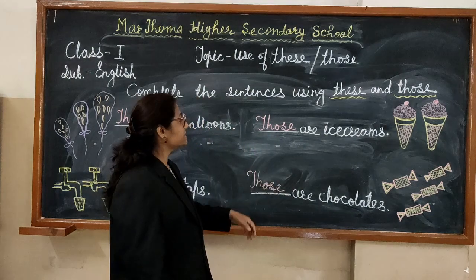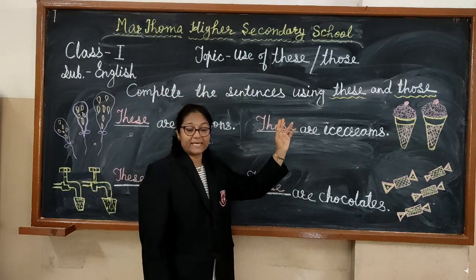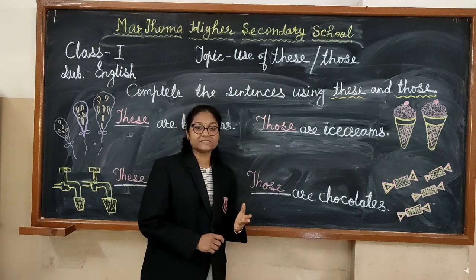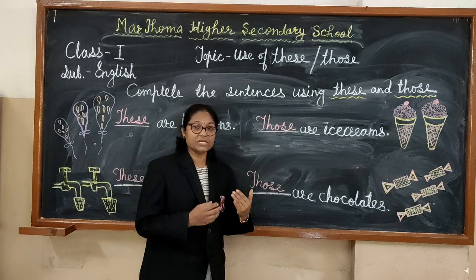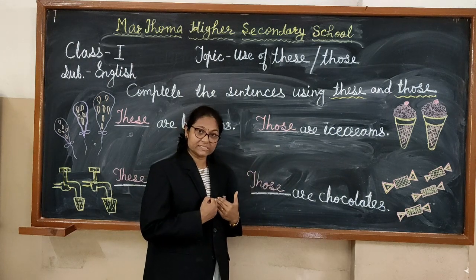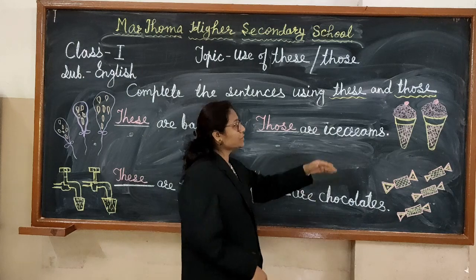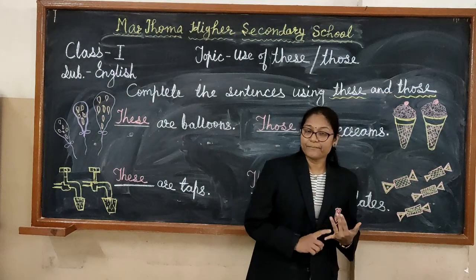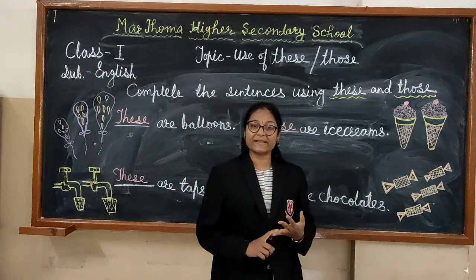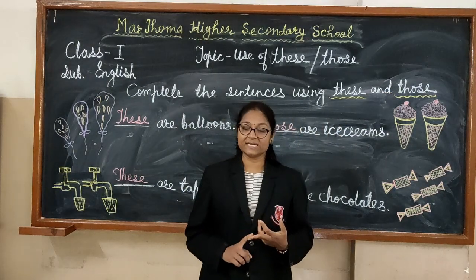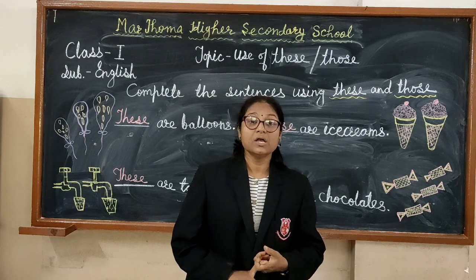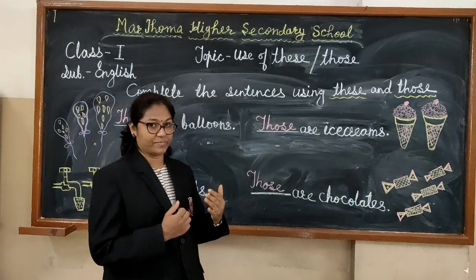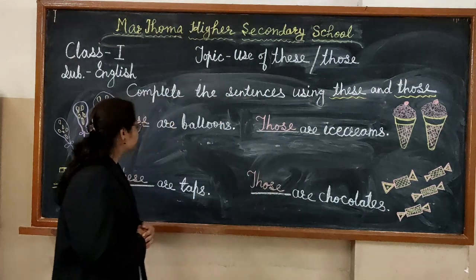We use 'these' to show many things, persons, and places which are near to us. And we use 'those' to show many persons, places, things, and animals which are far from us. Now see some examples.